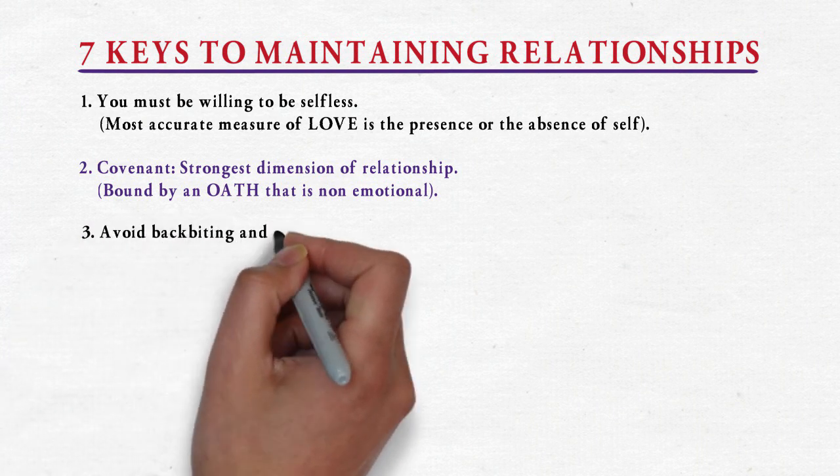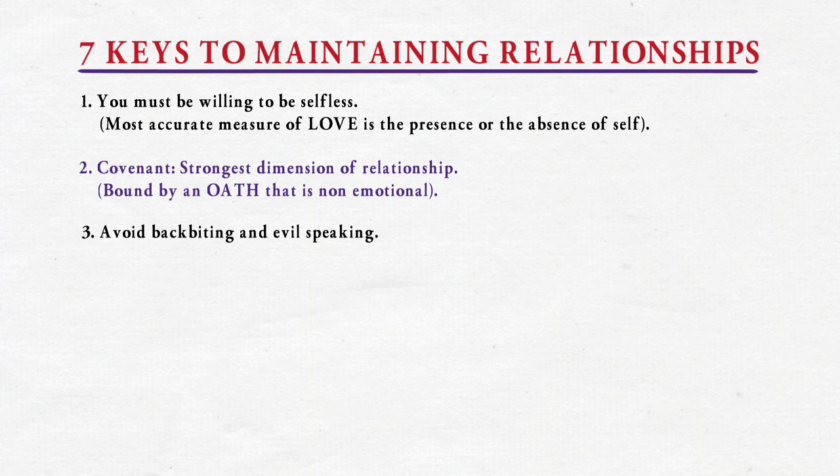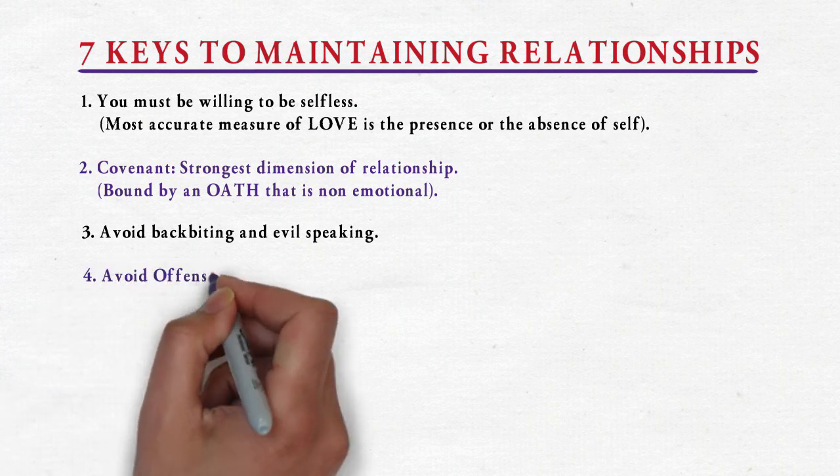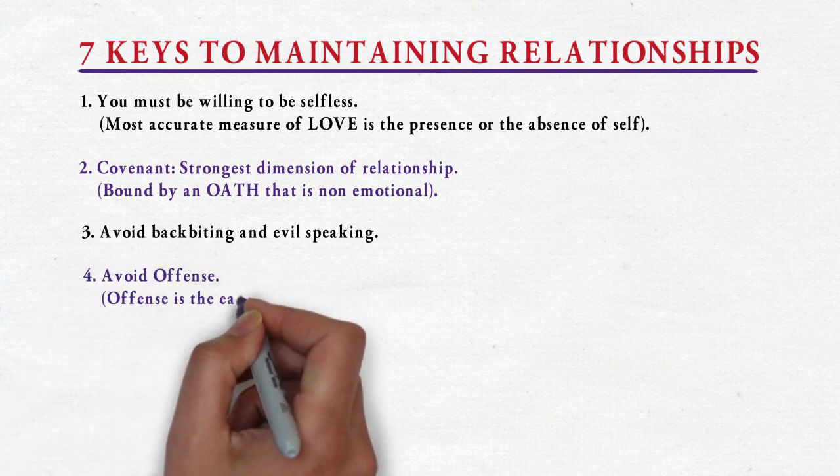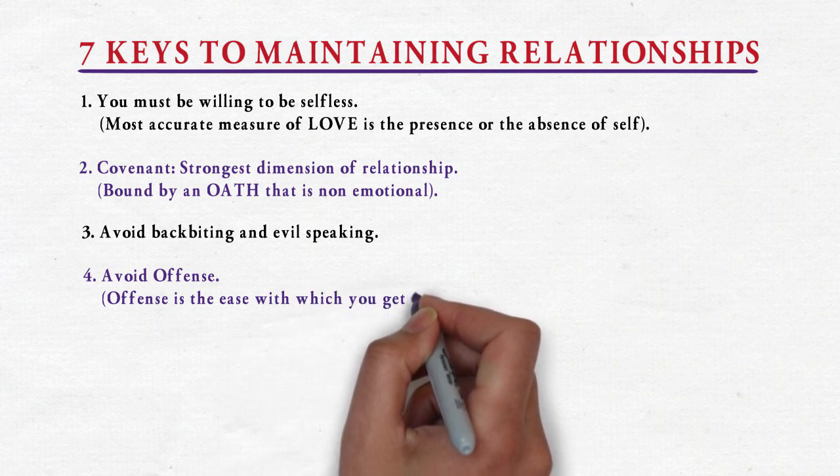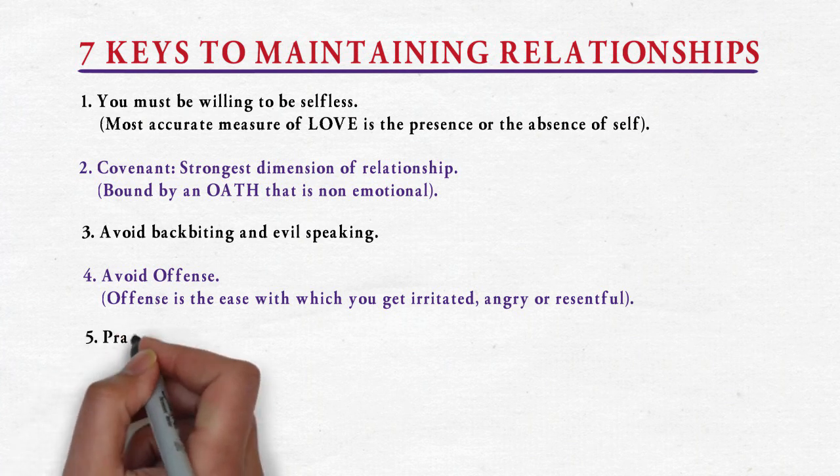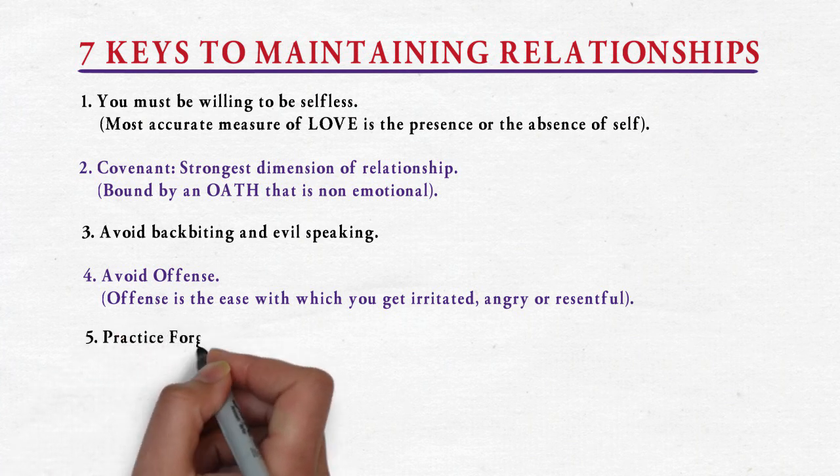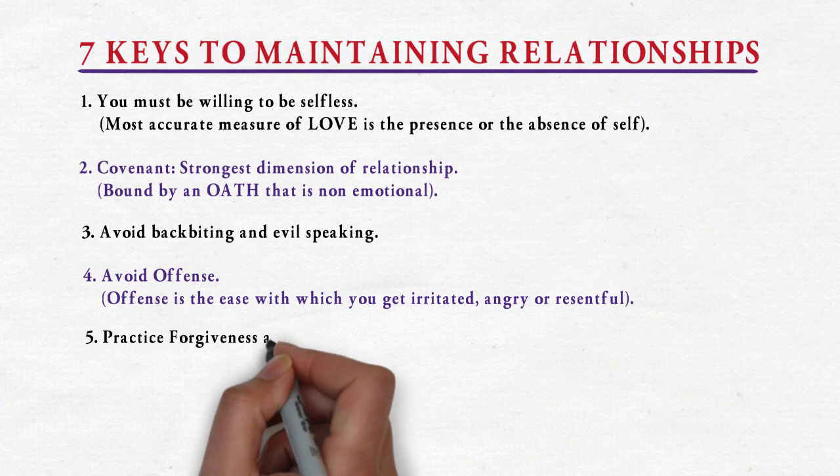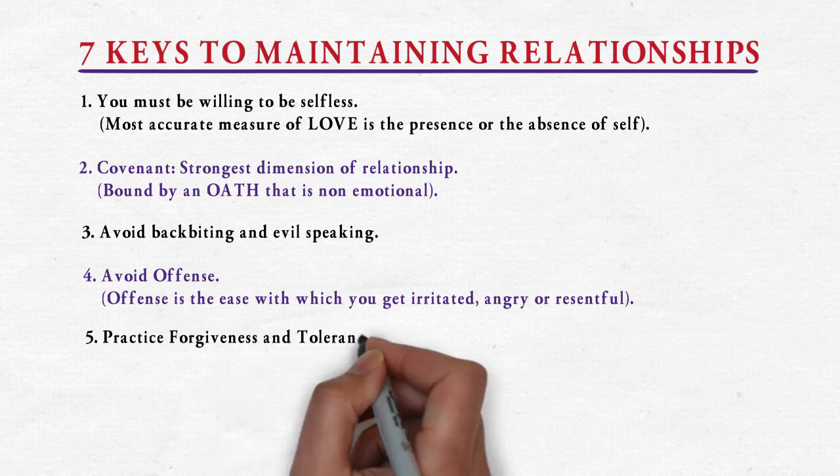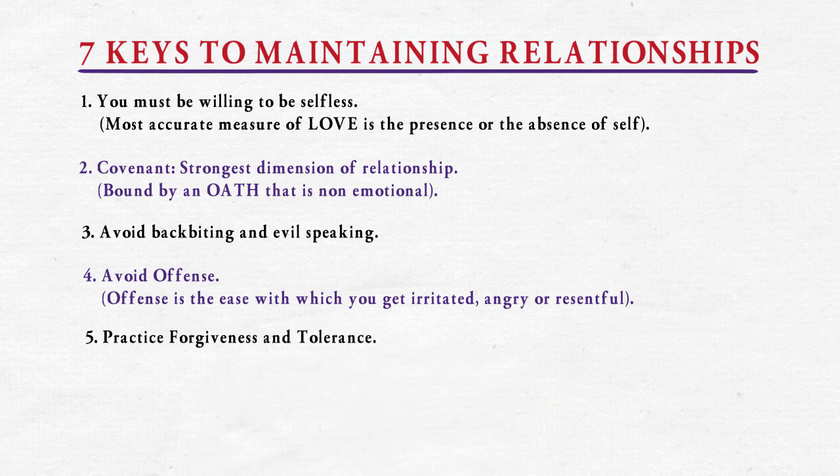Number four: avoid offense. Offense is the ease with which you get irritated, angry, or resentful. Number five: practice forgiveness and tolerance. Tolerance means you factor in that limitation and you know it will happen again.